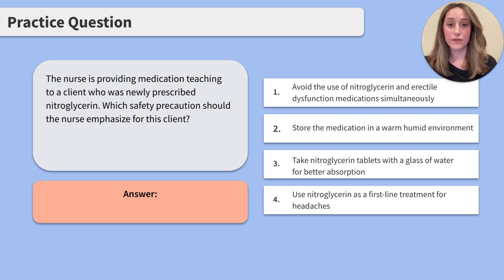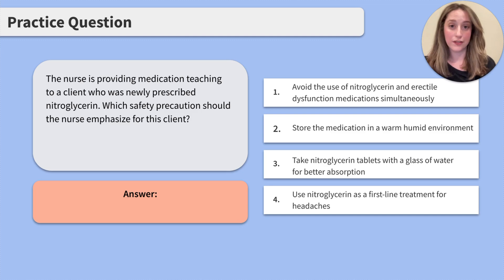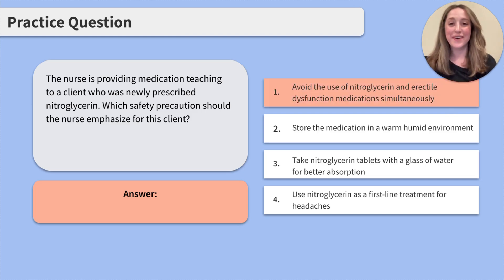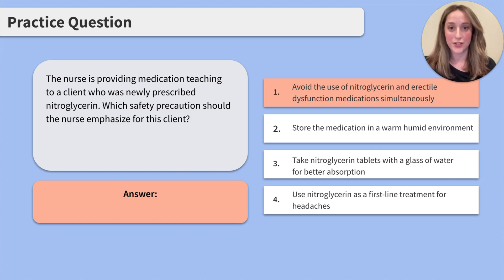Last answer choice, four: use nitroglycerin as a first-line treatment for headaches. While nitroglycerin is sometimes used off-label to treat certain types of headaches, it is primarily prescribed for the relief of chest pain associated with some heart conditions, and not a first-line treatment for headaches. So with that answer being incorrect, that leaves us with the correct answer being number one: avoid the use of nitroglycerin and erectile dysfunction medications simultaneously. Giving these medications at the same time could lead to severe hypotension.